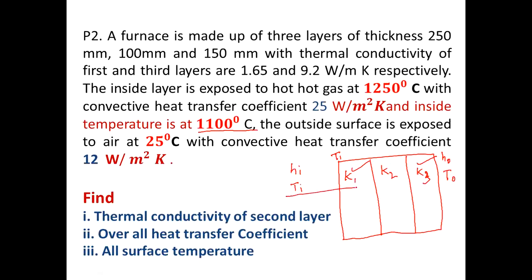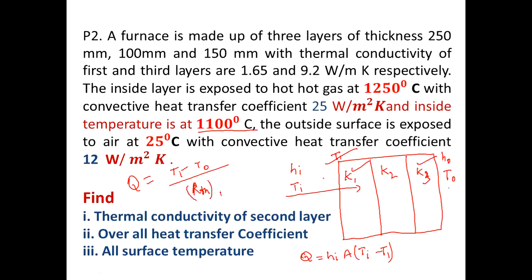You can find the heat transfer here. Q is equal to HI times A times delta T, where delta T is TI minus T1. If you find this value, it is easy to find the heat transfer from the equation: Q equals (TI minus T0) divided by R thermal resistance total.